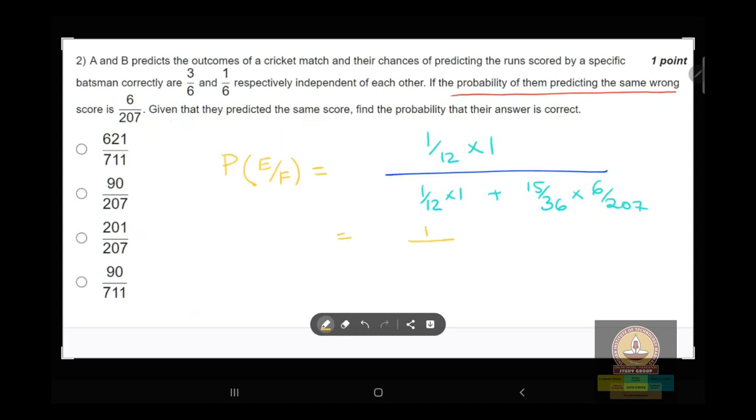207/237. Multiplying denominator and numerator with 3, we will get 621/711.